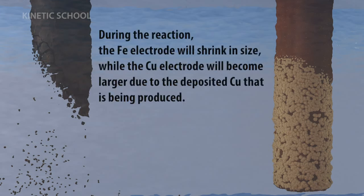During the reaction, the iron electrode will shrink in size while the copper electrode will become larger due to the deposited copper that is being produced.